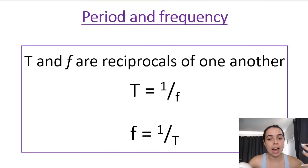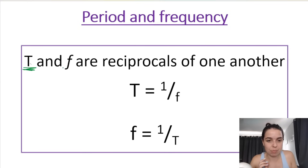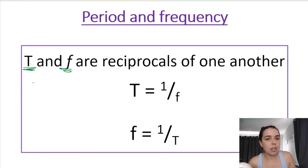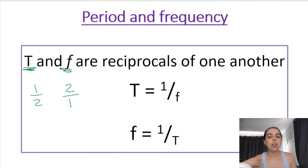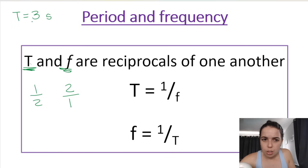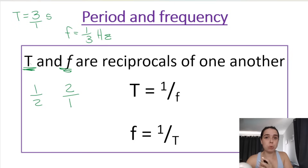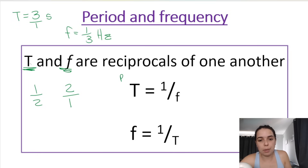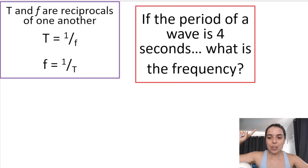Period and frequency are reciprocals of one another. If you know one, you can immediately get the other by flipping the fraction. Reciprocals: one over two and two over one — we flip the fraction. So if the period is three seconds, the frequency is one over three hertz. The two formulas are: T = 1/f and f = 1/T.